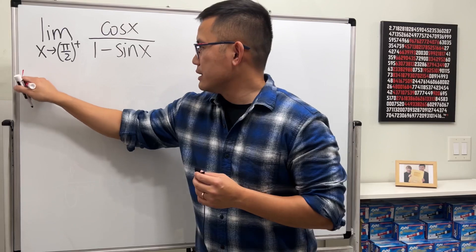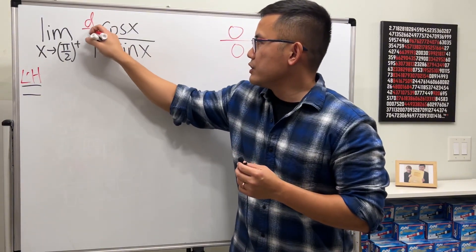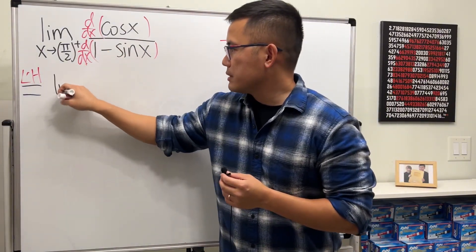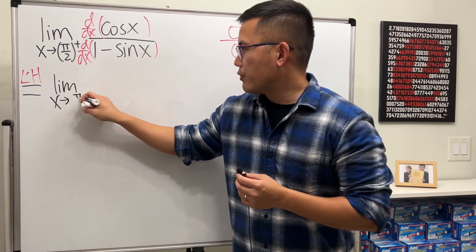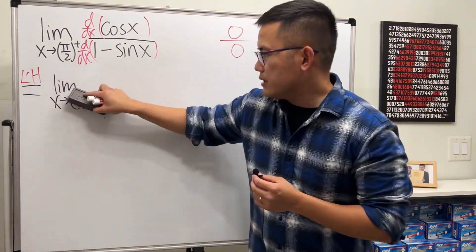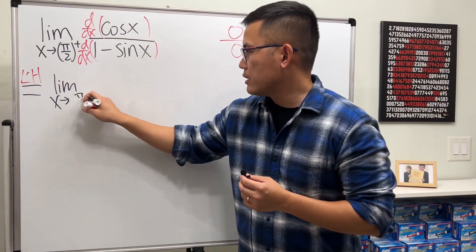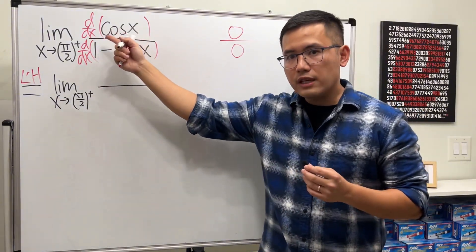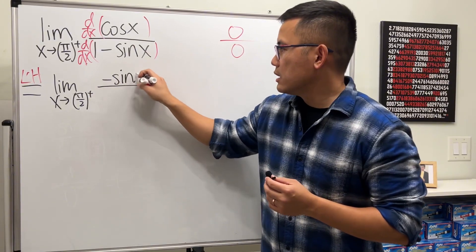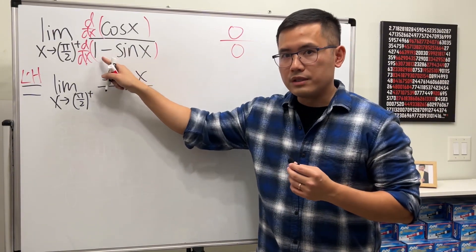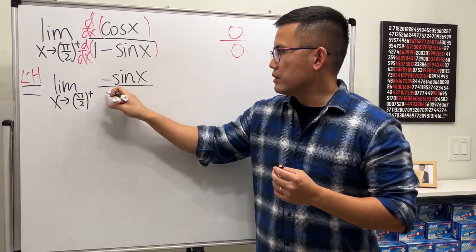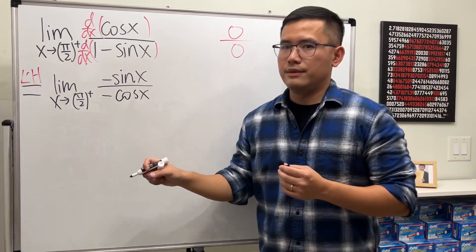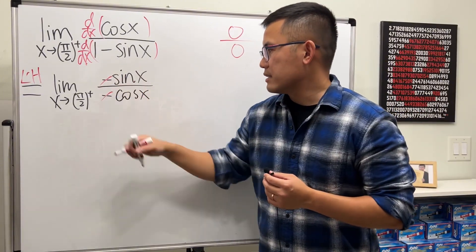Let me write this down and differentiate the top and differentiate the bottom. This becomes the limit as x approaches π/2 from the right. Even though this is a one-sided limit, L'Hôpital's Rule still works. On the top, the derivative of cosine x is negative sine x. On the bottom, the derivative of one is zero, the derivative of negative sine x is negative cosine x.